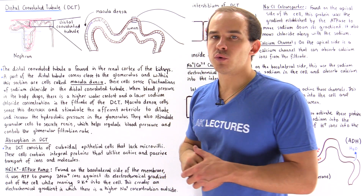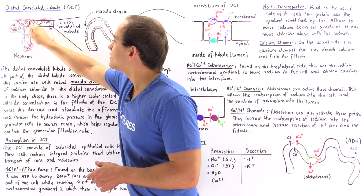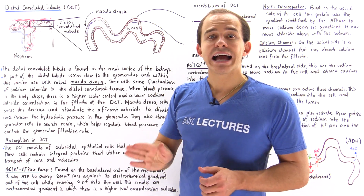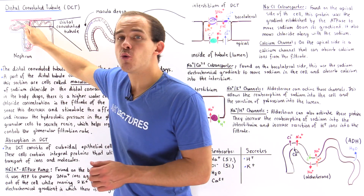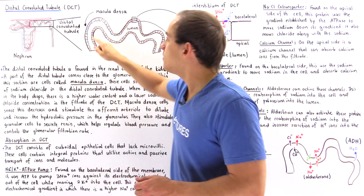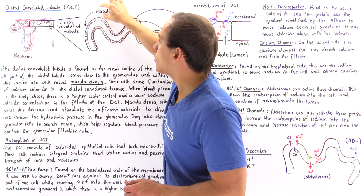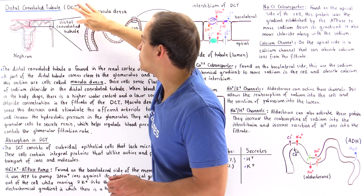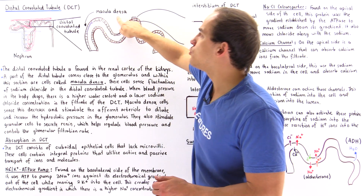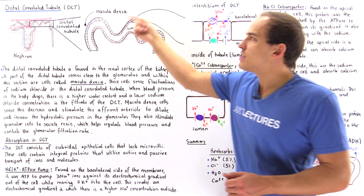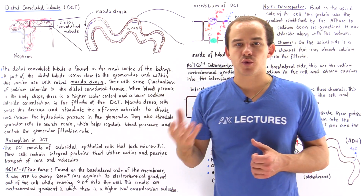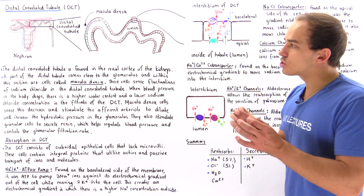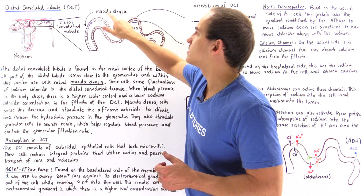The first cell type is shown in purple. This section of the distal convoluted tubule is found in close proximity to our glomerulus. We have our afferent arteriole running along this location, emptying into the glomerulus, and these purple cells are known as the macula densa, part of the juxtaglomerular apparatus that regulates and controls the functionality of the nephron.